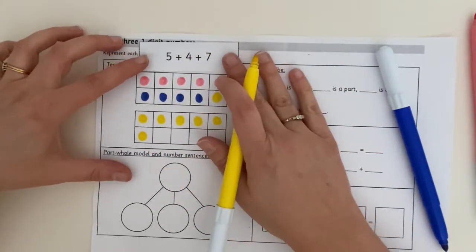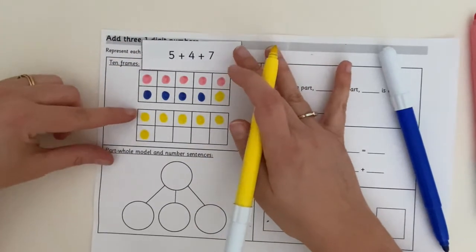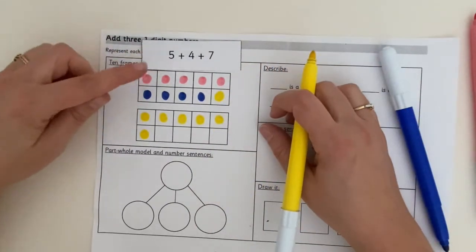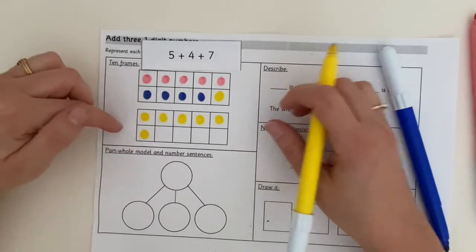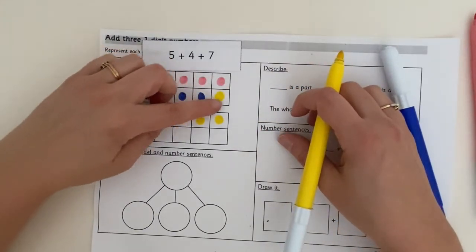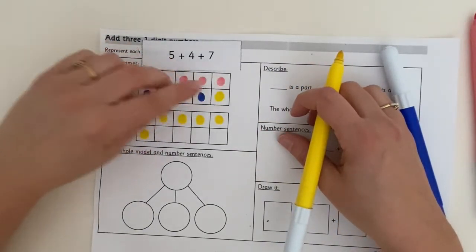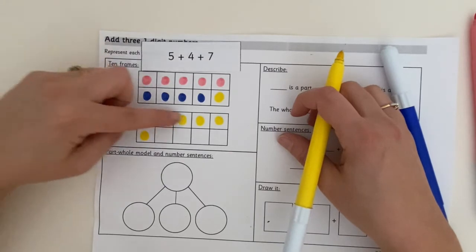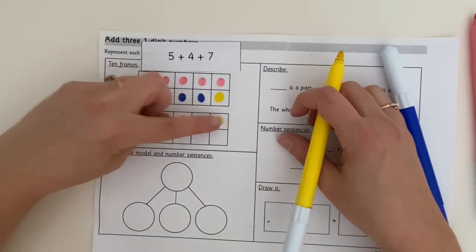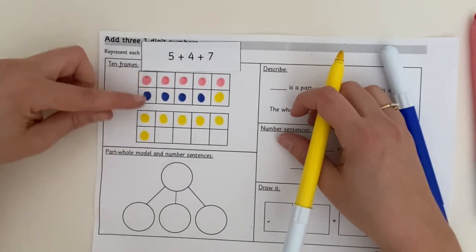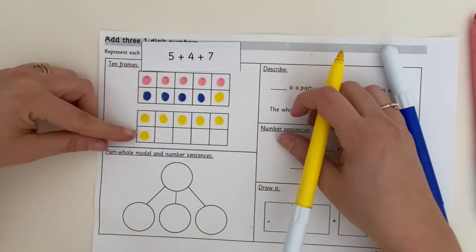That is 5 add 4 add 7 represented in a tens frame. You can see I've used a different colour for each number to make it really, really clear. So we know instantly, don't we, that we have got 10 here. We know a line across the top is five and one more. So 10, five, one, we've got 16.